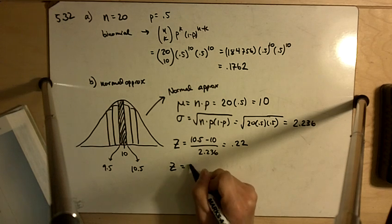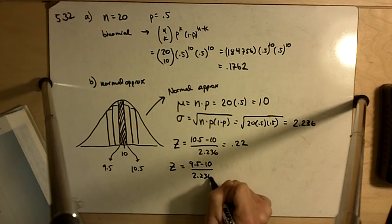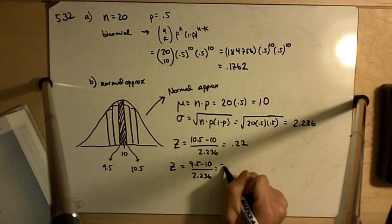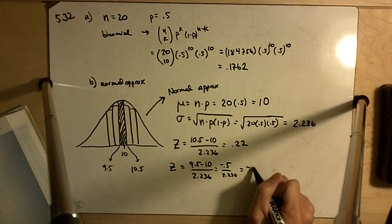And then z on the other side, you get 9.5 minus 10 divided by 2.236, so that's minus 0.5 divided by 2.236, and you get a negative 0.22.